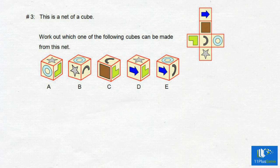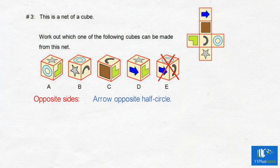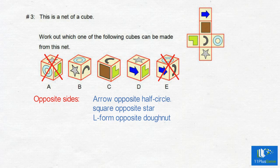Example 3: you are given a net of a cube and must choose from the answer choices the cube that can be formed from the given net. Identify the opposite sides: the arrow is opposite the half circle — we can eliminate E because the arrow is next to the half circle on that cube. The square is opposite the star. The L-form is opposite the doughnut — we can eliminate A because the L-form is next to the doughnut.